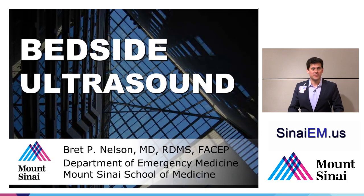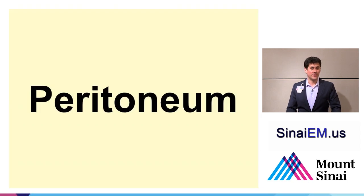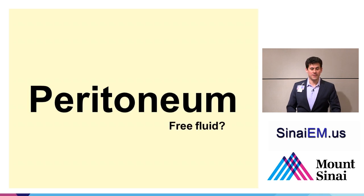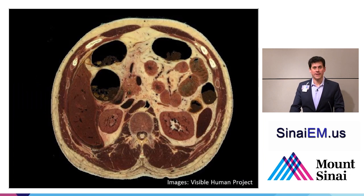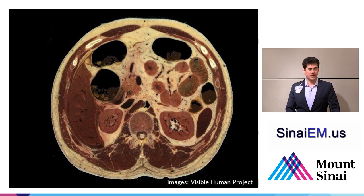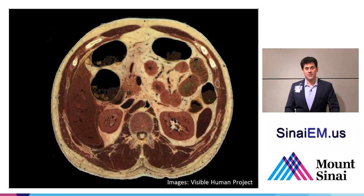I'm Brett Nelson from the Department of Emergency Medicine at Mount Sinai School of Medicine, and today we're going to be talking about ultrasound, specifically of the peritoneum. Two major questions to think about when focused on ultrasound of the peritoneum: is there free fluid in the abdomen? Here's a cross-section of the abdomen courtesy of the Visible Human Project, demonstrating the anatomy, especially the gravity-dependent areas through the abdomen, which is where we're going to find fluid accumulate. The goal of ultrasonography in this setting is to look in those gravity-dependent areas, which is our highest yield spot for looking for fluid.